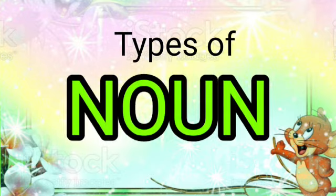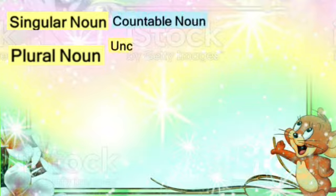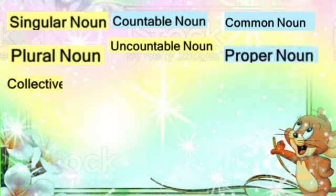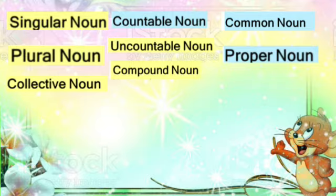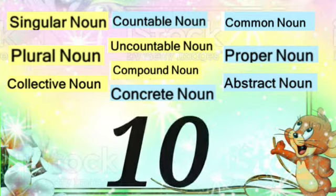Now we know the nouns. Let us see the types of nouns. There are many types of nouns — collective noun, compound noun, abstract noun. These are the ten types of nouns.